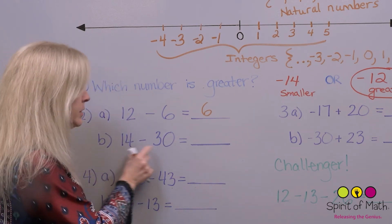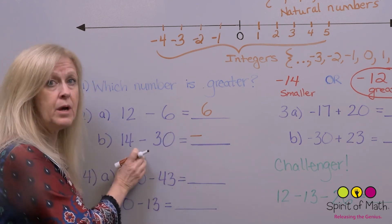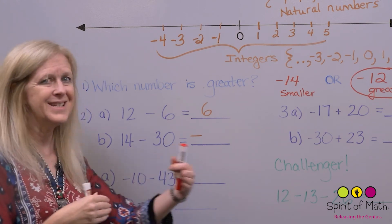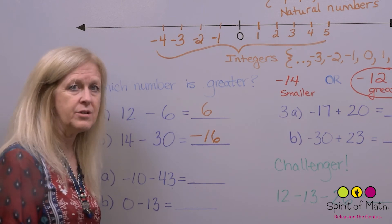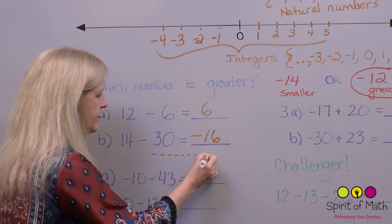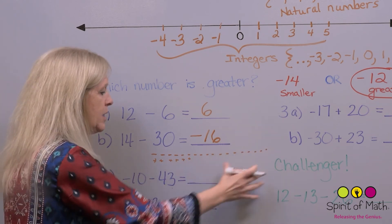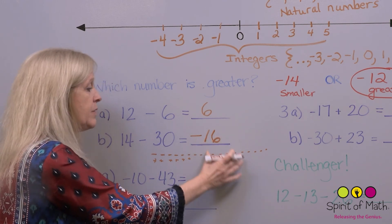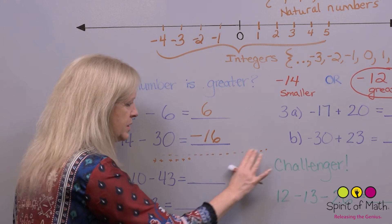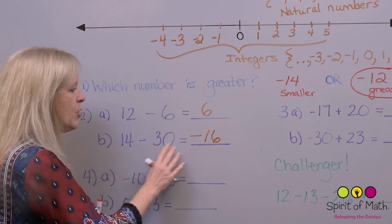If you've got 14 positives and 30 negatives, you've got more negatives than positives, so the answer is going to be negative. How many more negatives than positives? From 14 to 30 — that's 16 more. So the answer is negative 16. You can think of it this way: if you write out 30 negatives and 14 positives, what's left over is a bunch of extra negatives, and that extra amount is 16. So the answer is negative 16.